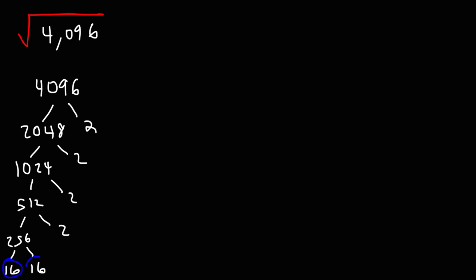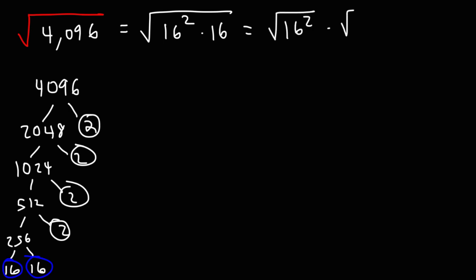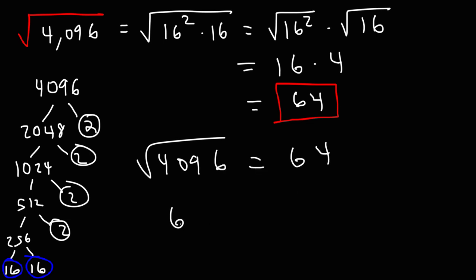So we have two 16s, which we can write as 16 squared. And then we have four 2s. If you multiply 2 four times, that's equal to 16. So we have the square root of 16 squared times the square root of 16. The square root of 16 squared is simply 16. And the square root of 16 is 4. 16 times 4 is 64. So this is the answer right here. The square root of 4,096 is equal to 64. Or you could say that 64 squared is 4,096.